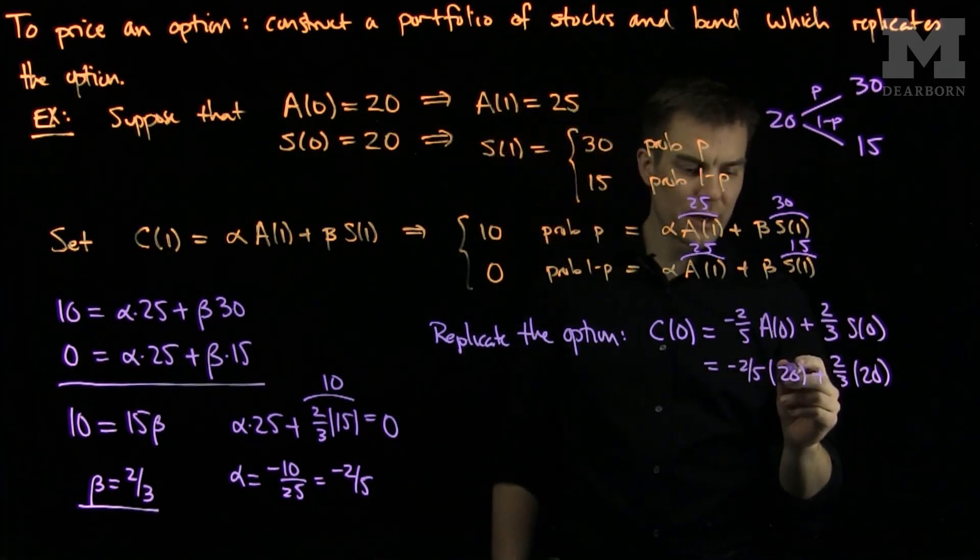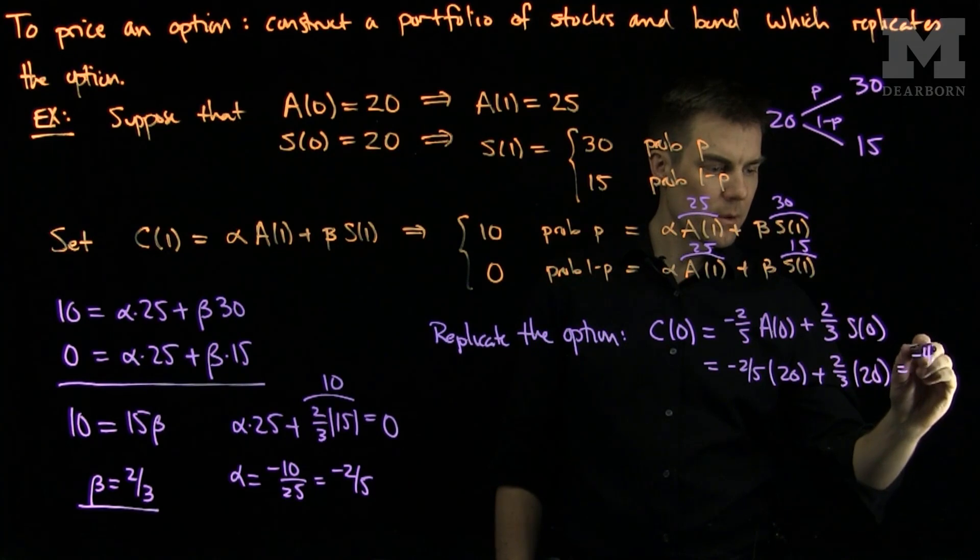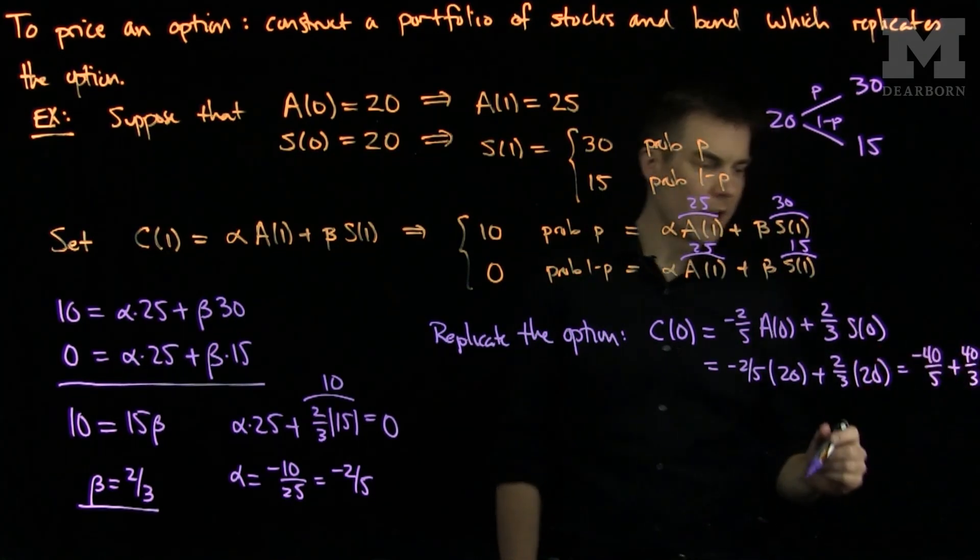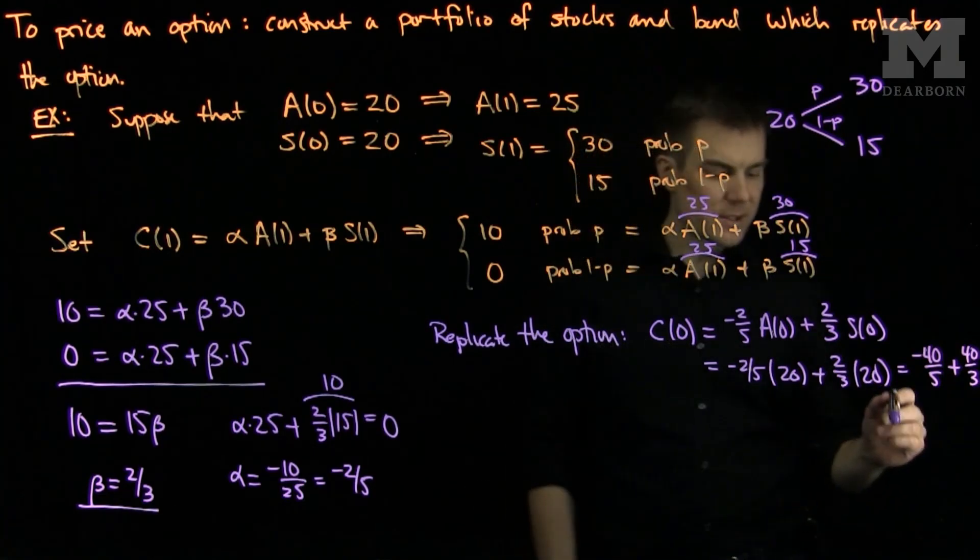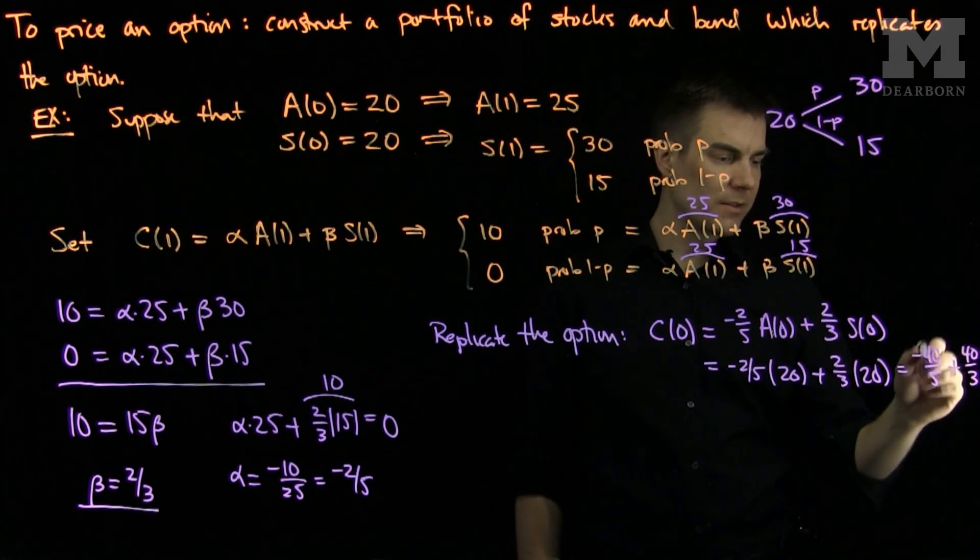And so what we will see over here is that this will be negative 40 over 5. And this will be plus 40 over 3. So we can simplify this a little bit further. This is negative 120. So this is going to be 40 times 5 is 200.